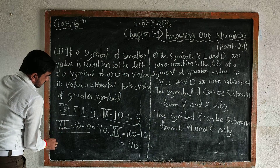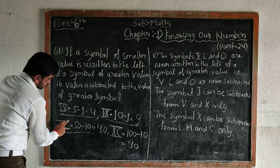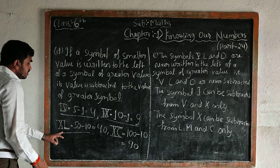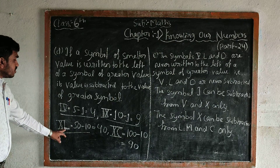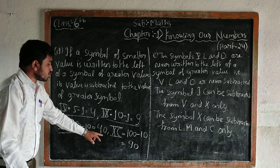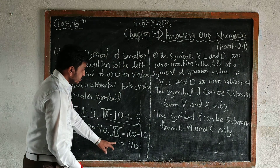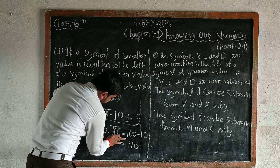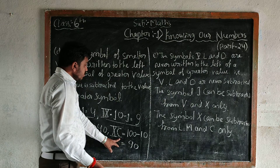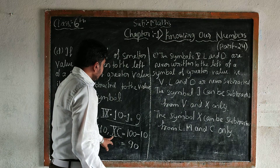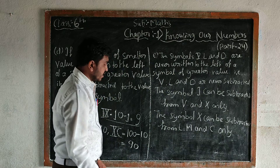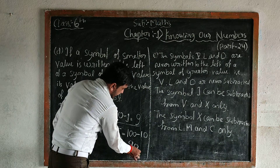Also, L minus 10: that means 50 minus 10 is equal to 40. And for C — writing 10 before C, C means 100, so 100 minus 10 gives us 90.